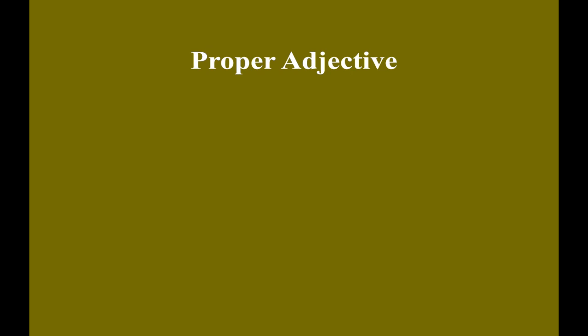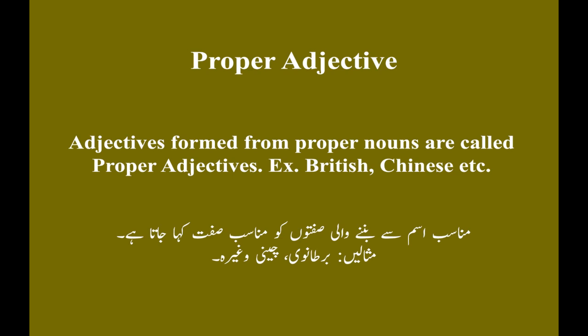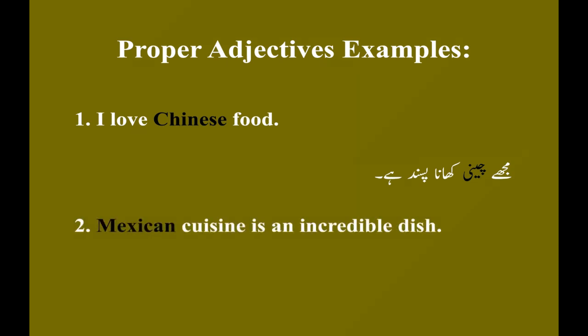Proper adjective. Adjectives formed from proper nouns are called proper adjectives. Examples: British, Chinese, etc. Example number one: I love Chinese food. Mujhe Chaini khana pasand hai. Example number two: Mexican cuisine is an incredible dish. Mexican khana ek naqabil-e-yaqeen dish hai.